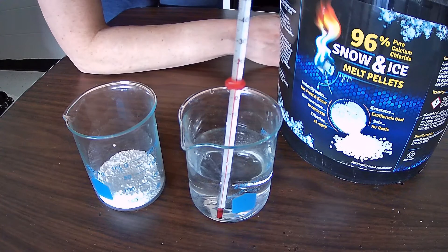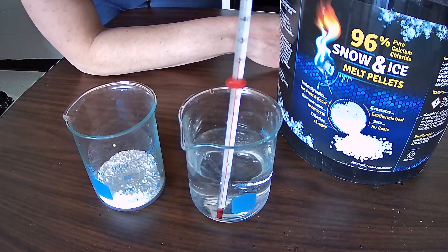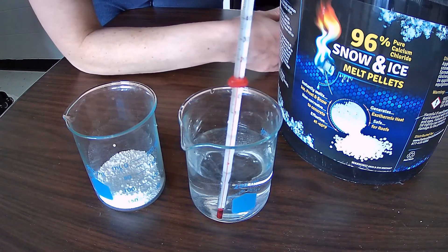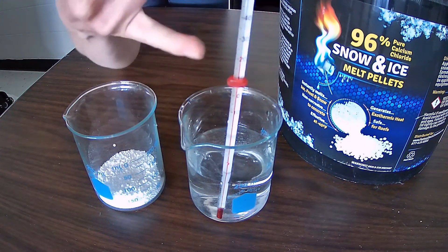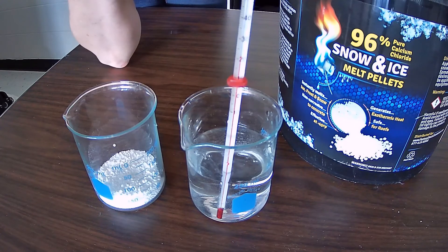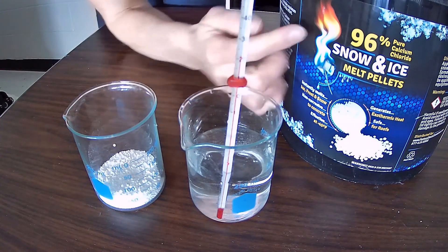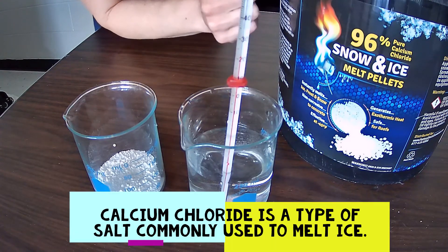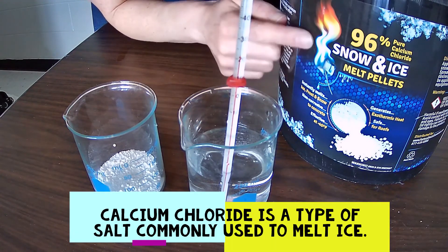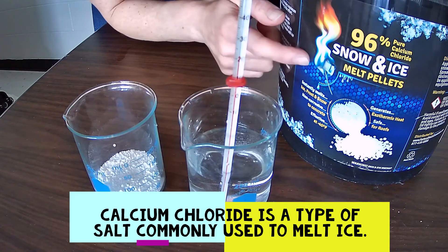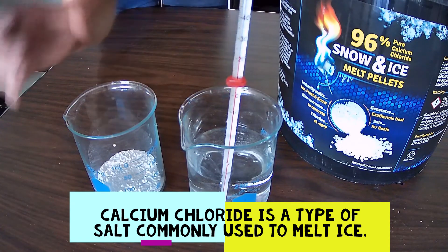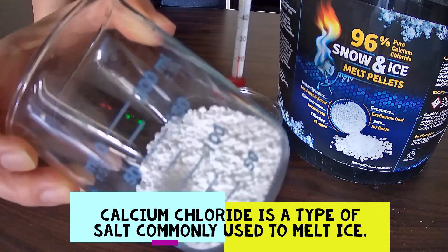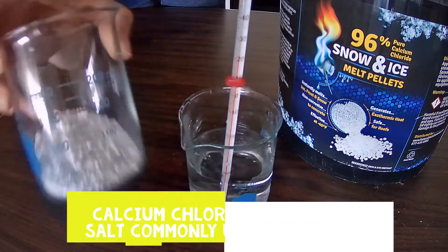Today, we're going to do a little demo to show that there is energy stored in chemical bonds. Right now, you can see I have some water, and it's at room temperature, about 22 degrees Celsius, and I have some calcium chloride, which is sold in stores as a product to melt snow. It looks like little dip and dots, is what my students call it, but they come in these little pellets.